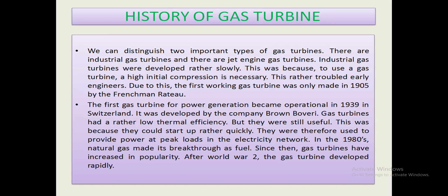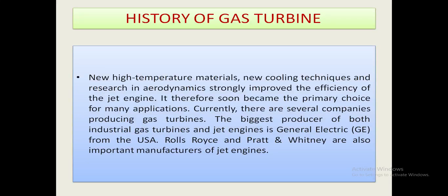In the 1980s, natural gas made its breakthrough as fuel, and since then gas turbines have increased in popularity. After World War II, the gas turbine developed rapidly. New high-temperature materials, new cooling techniques, and research in aerodynamics strongly improved the efficiency of the jet engine. Currently, several companies produce gas turbines. The biggest producer of both industrial gas turbines and jet engines is General Electric from the USA. Rolls-Royce and Pratt and Whitney are also important manufacturers of jet engines.